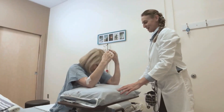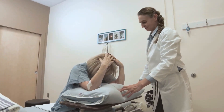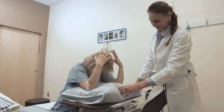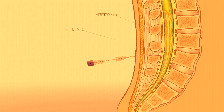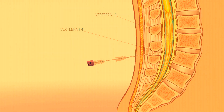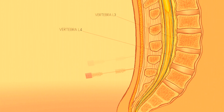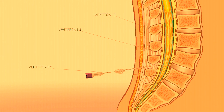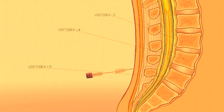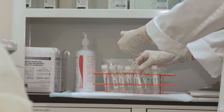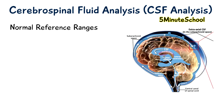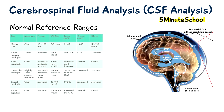During the procedure, you'll lie on your side or sit up, and the drawing site will be cleaned and usually anaesthetised. A needle is inserted between two vertebrae in your lower spine, and a small amount of cerebrospinal fluid will be drawn out for testing. This usually takes about three minutes.